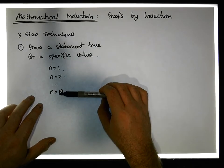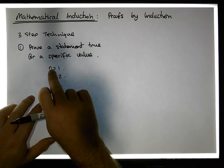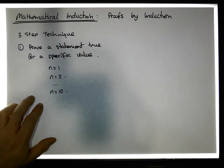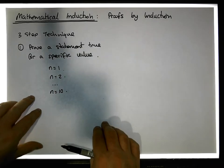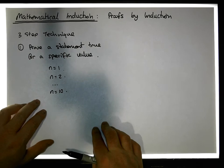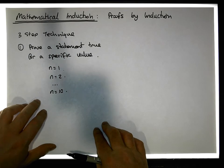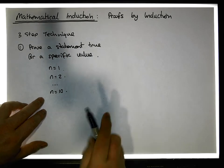In other words, if we want to prove something true for all n greater than or equal to one, we should start with one. If we want to prove some statement true for all n greater than or equal to a thousand, we should start with a thousand. The first step is to prove the statement true for a specific value.